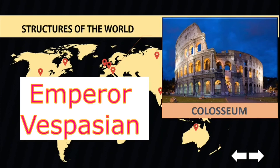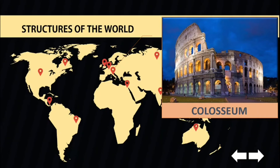Emperor Vespasian conceptualized the construction of the Colosseum, using the treasures seized during the Great Jewish Revolt in 70 AD to fund its construction. When he died in 79 AD, his son Titus completed the construction in 80 AD and inaugurated it during his time.